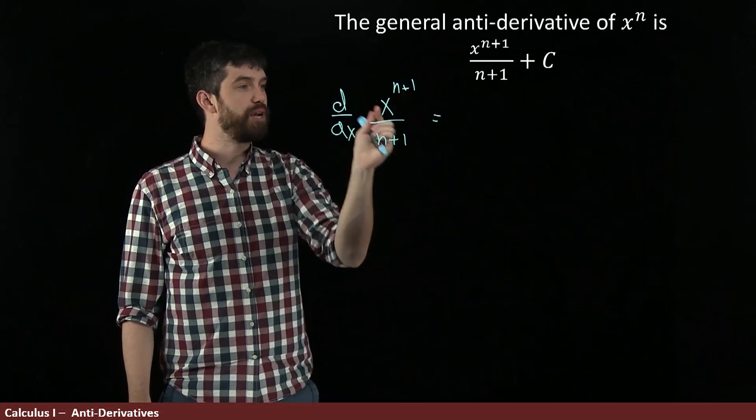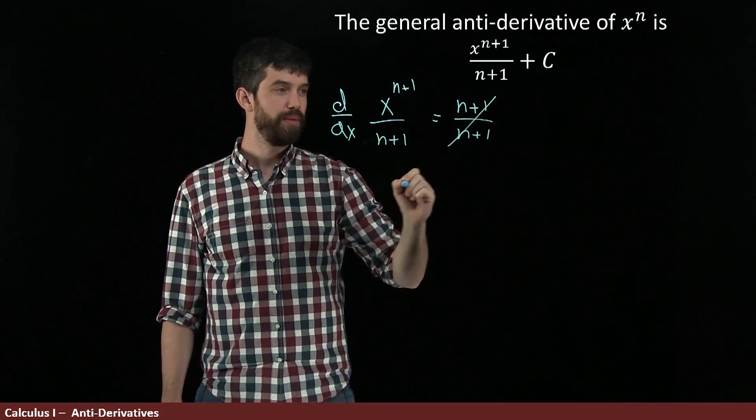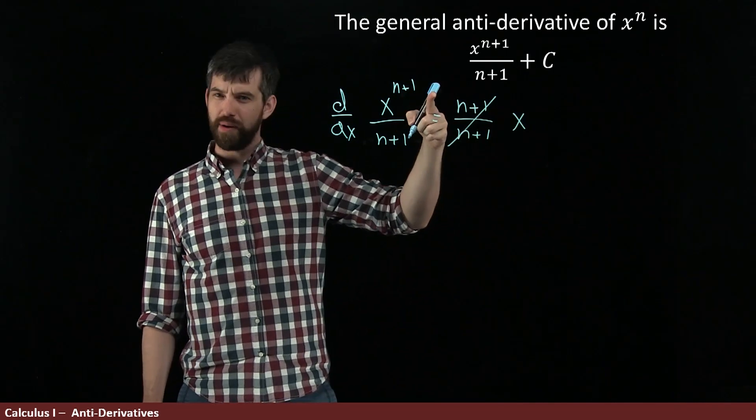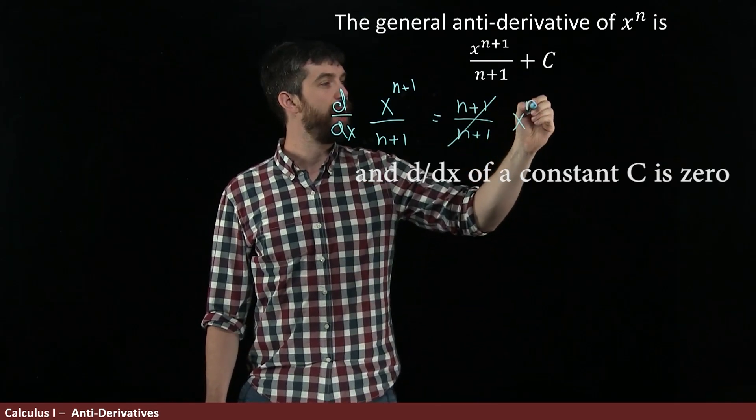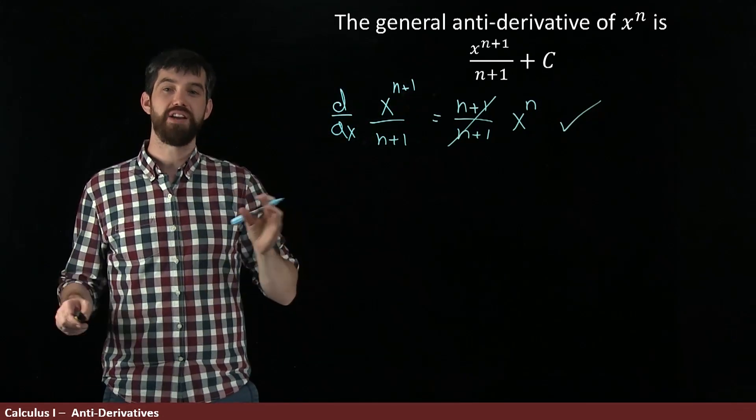The n plus 1 comes out the front. So it's n plus 1 all divided by n plus 1. Oh, that's good. That's going to cancel. And then x to the power of n plus 1 minus 1. So x to the power of n. So yes, indeed, this is going to be an antiderivative.